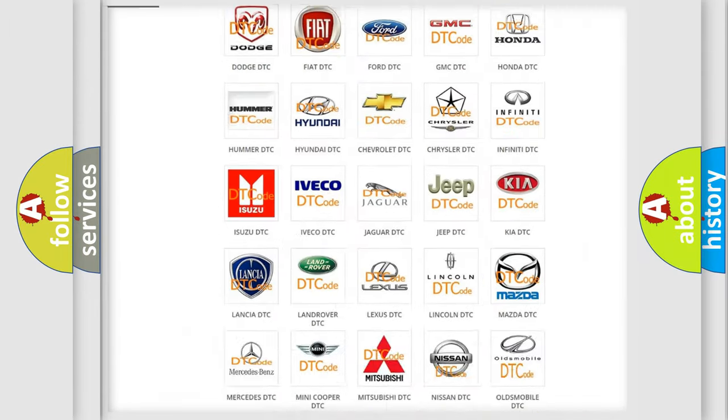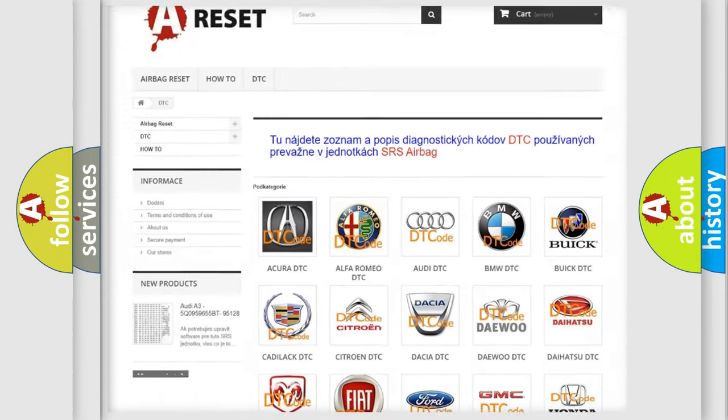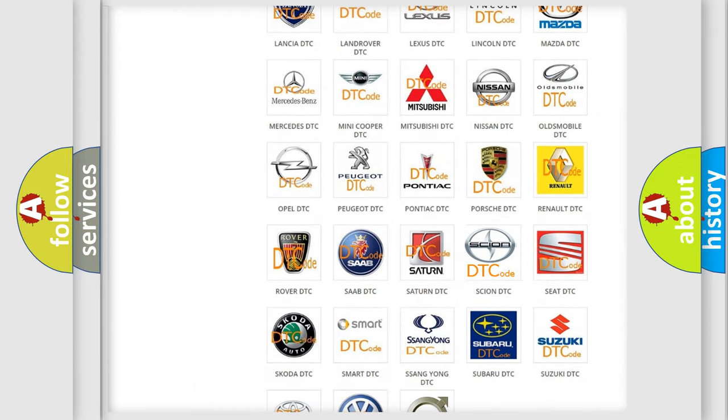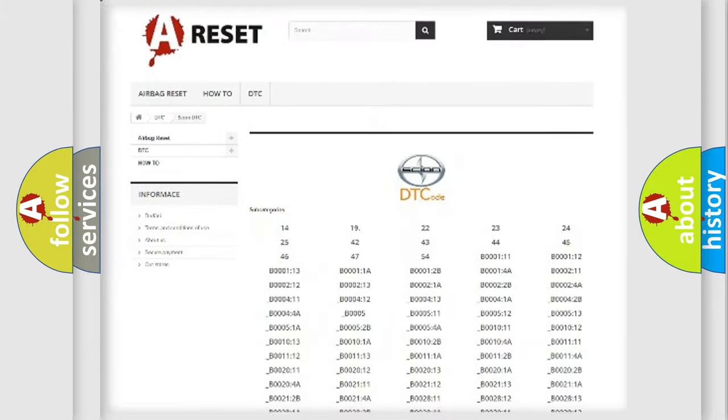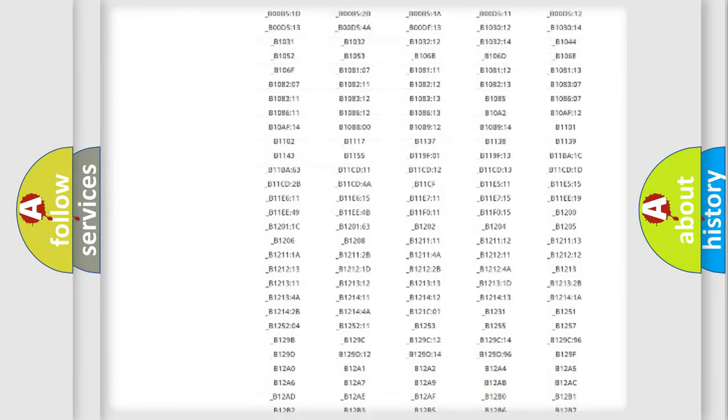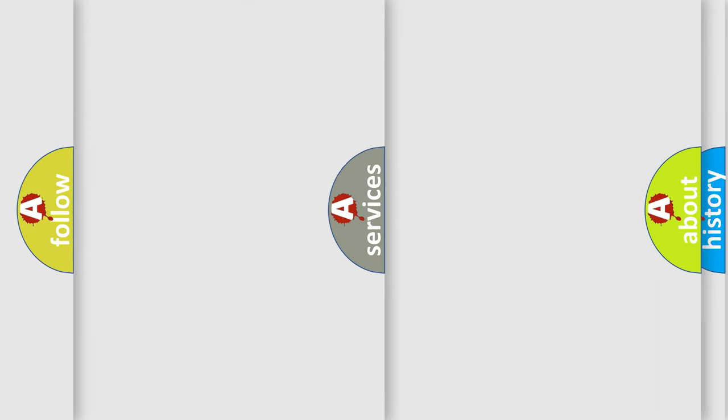Our website airbagreset.sk produces useful videos for you. You do not have to go through the OBD2 protocol anymore to know how to troubleshoot any car breakdown. You will find all the diagnostic codes that can be diagnosed in Scion vehicles, also many other useful things.